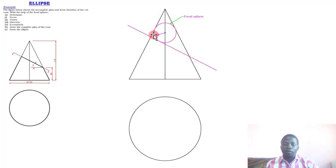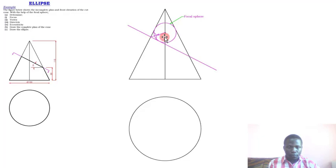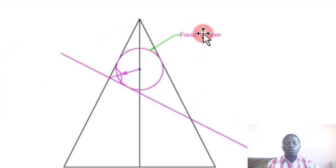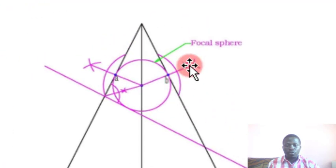To inscribe the circle, we bisect any two angles of the triangle. When you bisect the angle you get the center, and using that center you draw the circle. That circle is what we call the focal sphere.